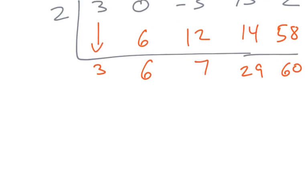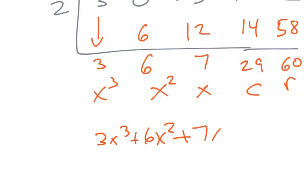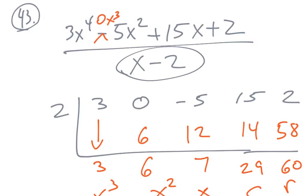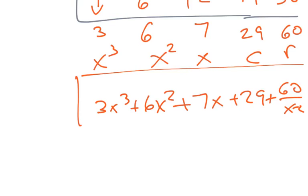So breaking this down, this is the remainder, this is the constant, this is x, x squared, x cubed, this is 3x cubed plus 6x squared plus 7x plus 29 plus 60 over x minus 2. It's always at the end, it's always divided by this value, and that is what it breaks down to.